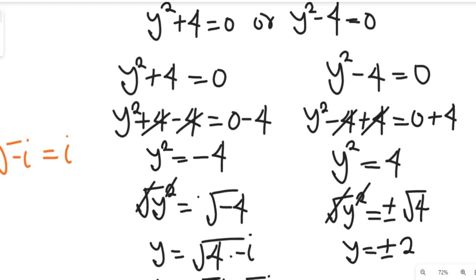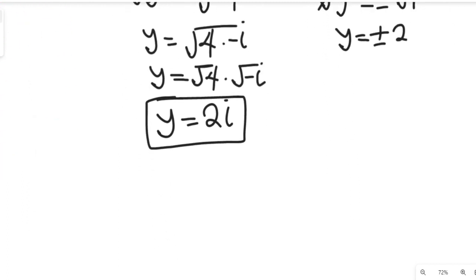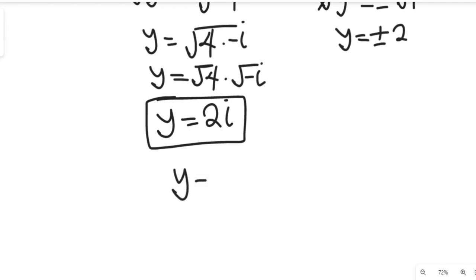So we have the full set of values for y: y equals 2j, y equals positive 2, and y equals negative 2.